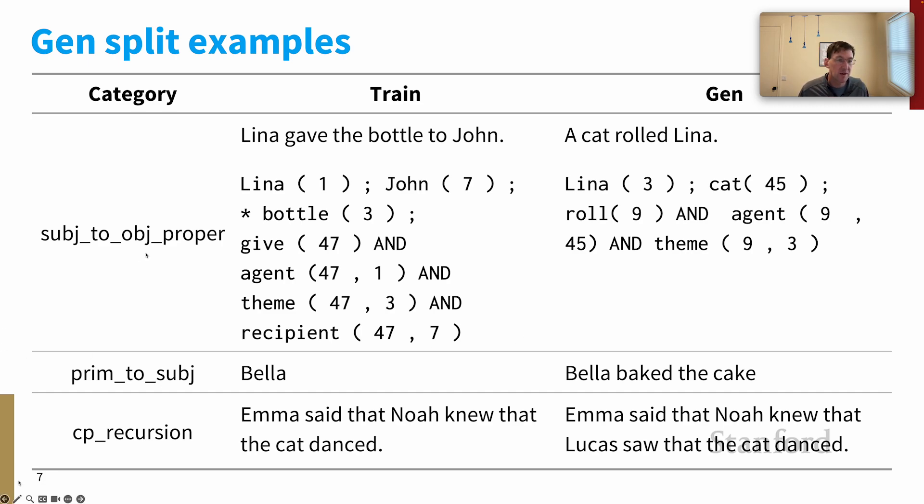For example, this category is subject to object proper name. The idea here is that we'll have some names that we see in subject position in the train set, like Lena here is the subject. And then in the generalization split, we will encounter Lena in object position, and that will be a new occurrence of Lena. And the task is to see whether the model can figure out what role Lena plays in the semantics for that unfamiliar input.